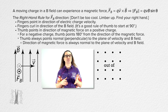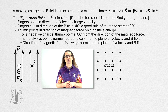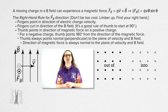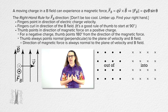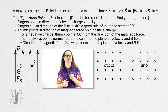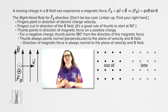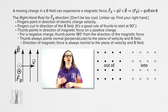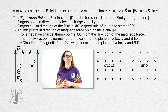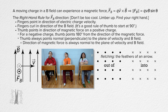180 degrees from that is into the screen. The symbol for into the screen is an x. Therefore, a uniform field into the screen looks like this. The best analogy for remembering these two symbols is to picture the field being represented by an arrow. For out of the screen, the arrow is coming at you and the dot represents the tip of the arrow coming at you. For into the screen, the arrow is going away from you and the x represents the fletching of the arrow as it moves away from you — the feathers on the back of the arrow.